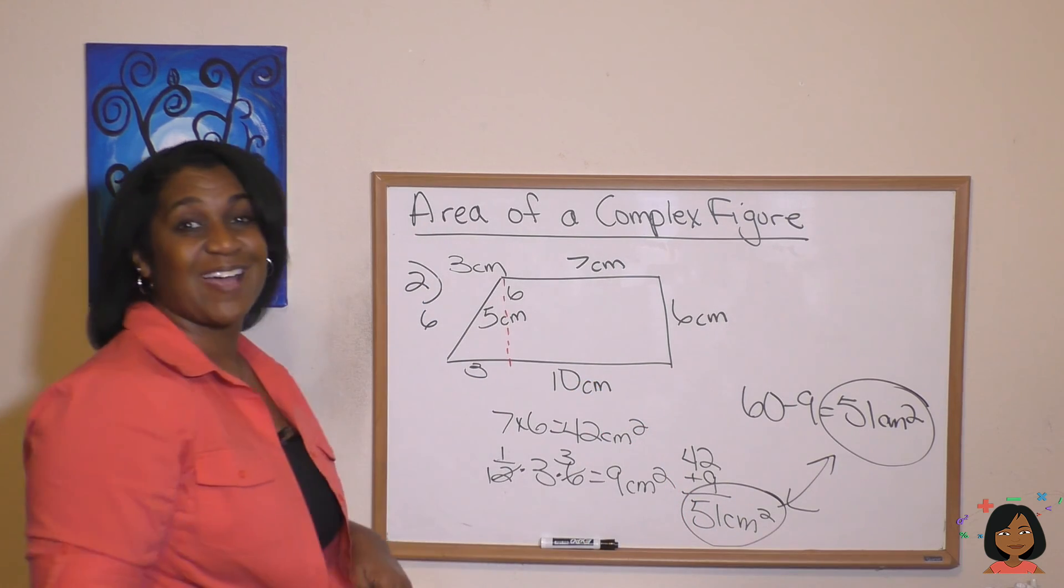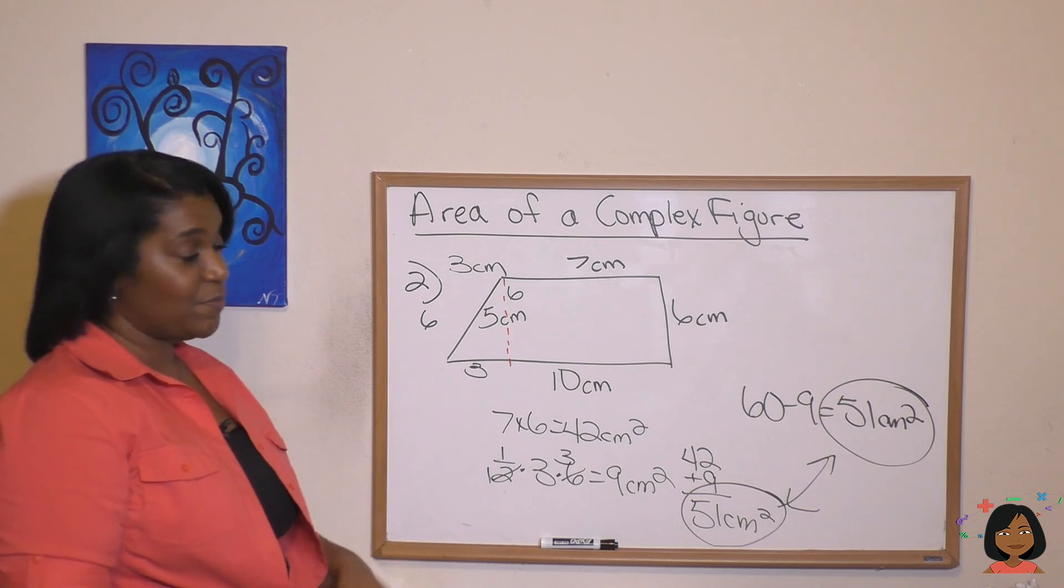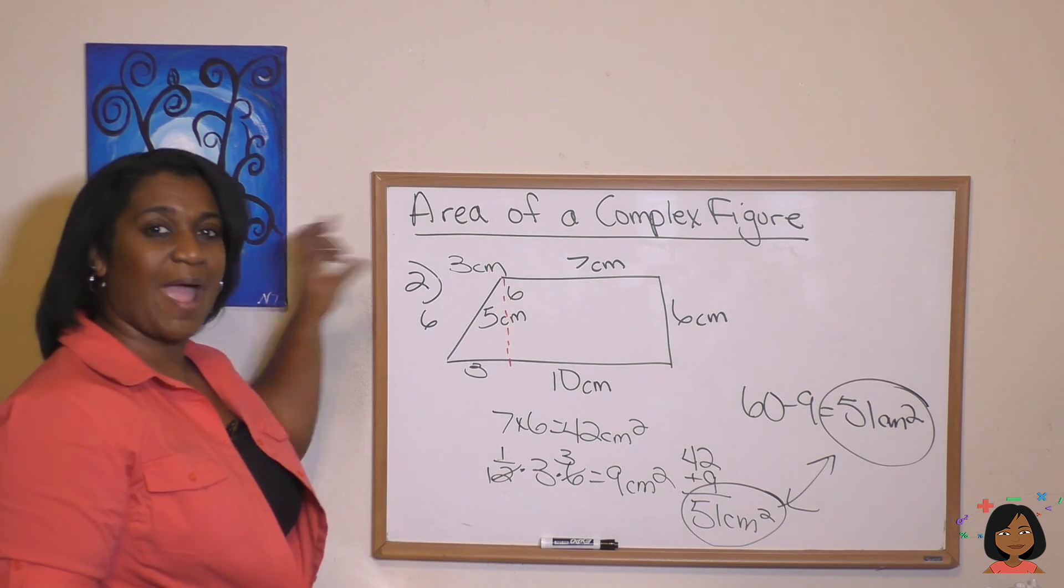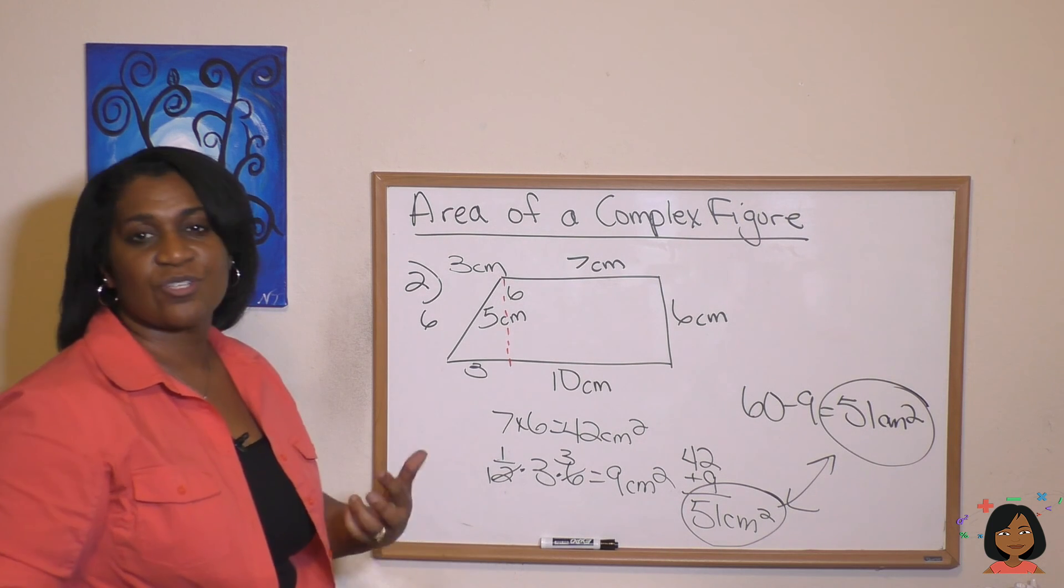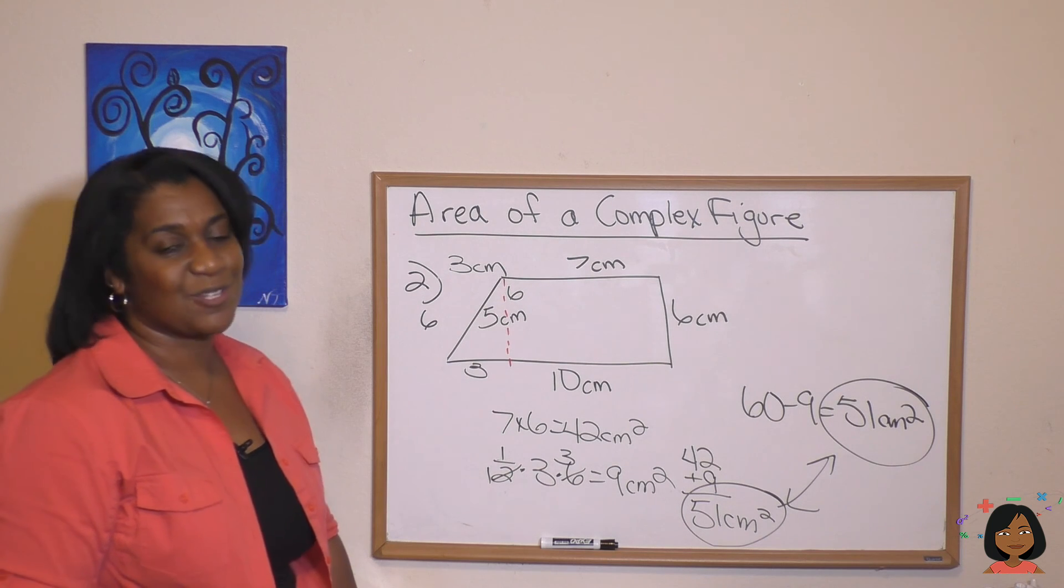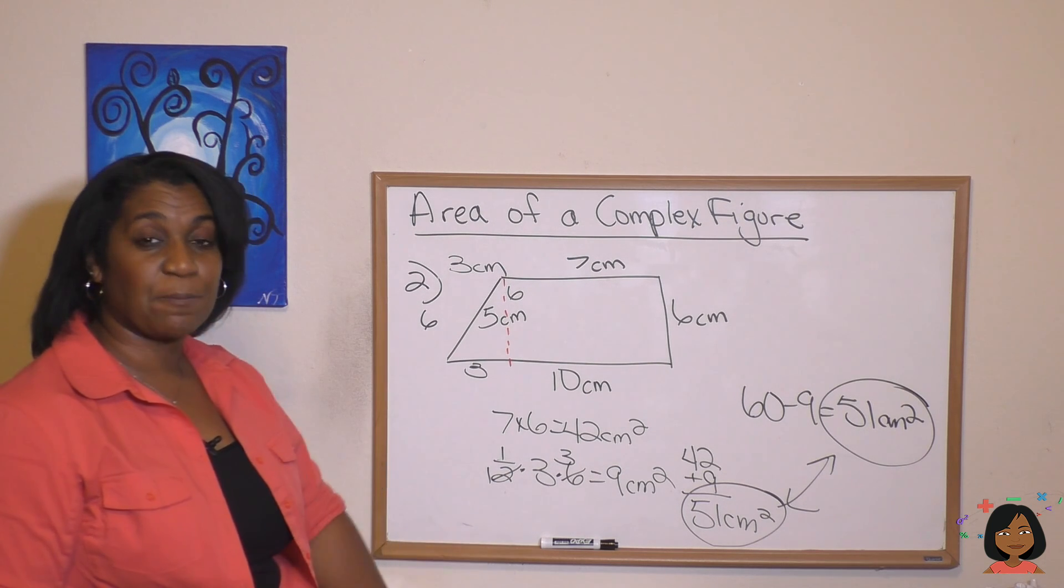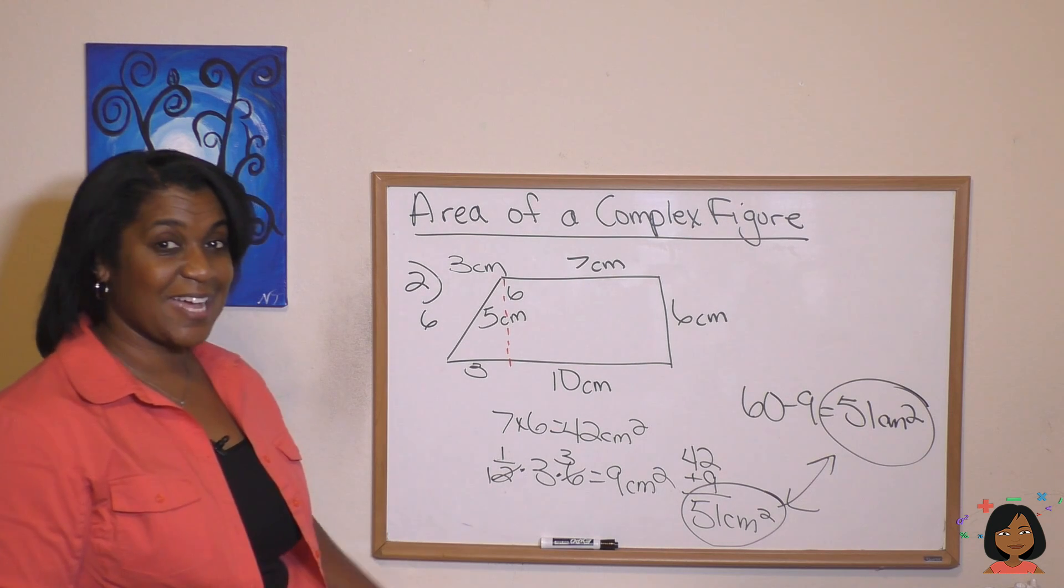So it doesn't matter how you do it. If you do two pieces and add them together or if you do the whole and subtract out the missing piece, they're still going to equal the same thing. The key is just knowing how to break it down. Okay, that's it for me today, Nicole the math lady. Definitely try the practice problems to see if you can do this on your own. Talk to you next time. Bye-bye.